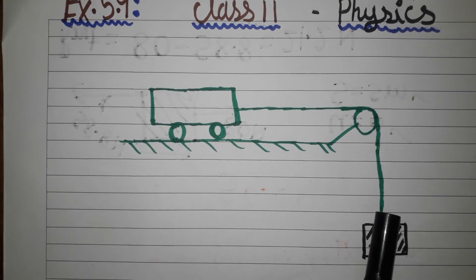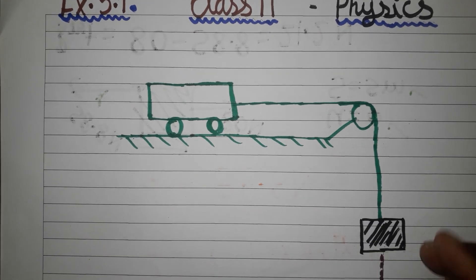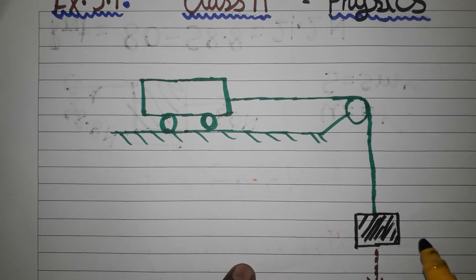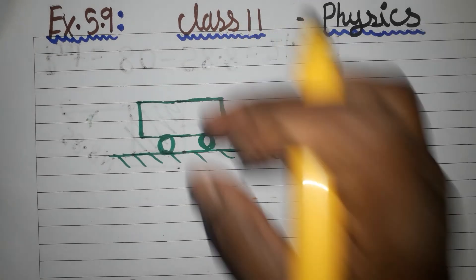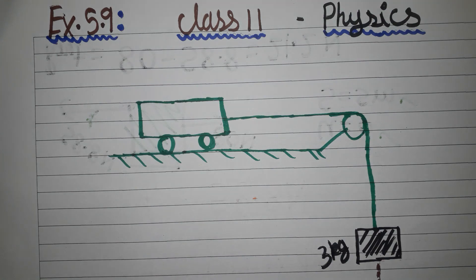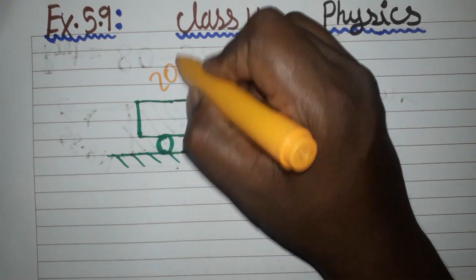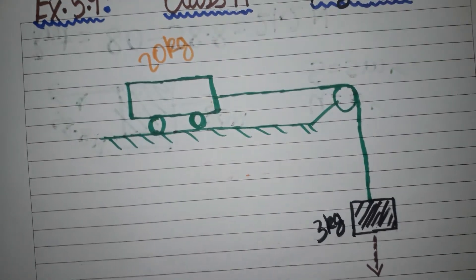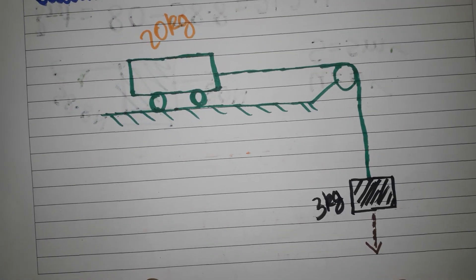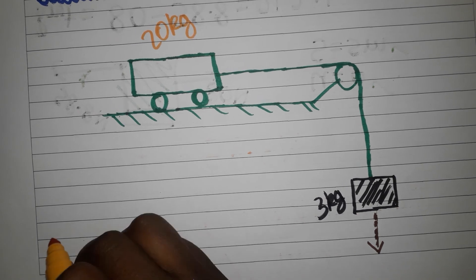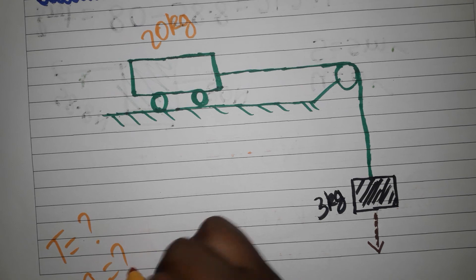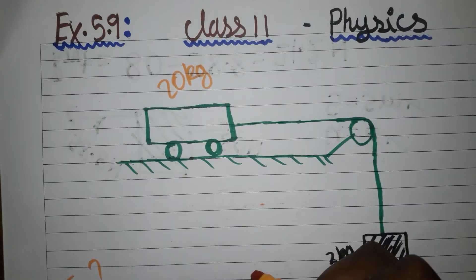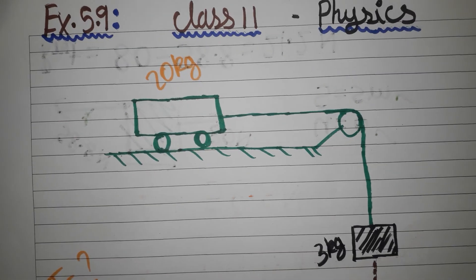First we will see what is given in the question. The mass of 3 kg is here, and we have one trolley whose mass is 20 kg, which is given in the question. Now, they asked what is the tension force and what is the acceleration. These two we should find — tension and acceleration.